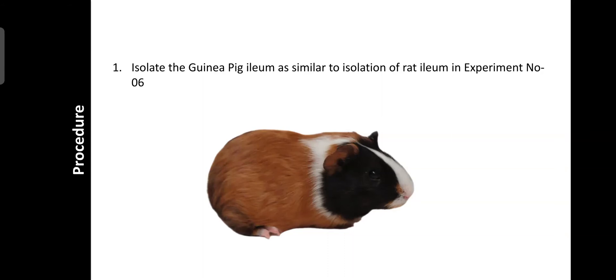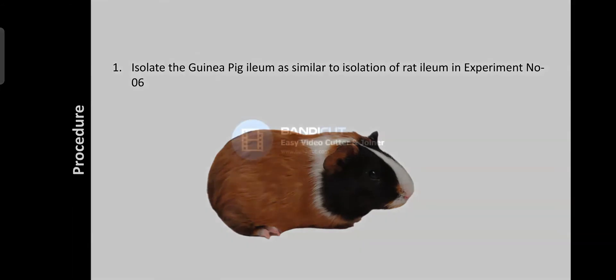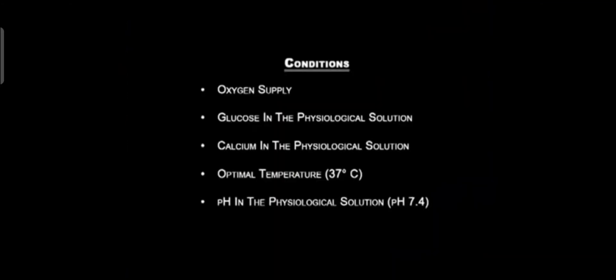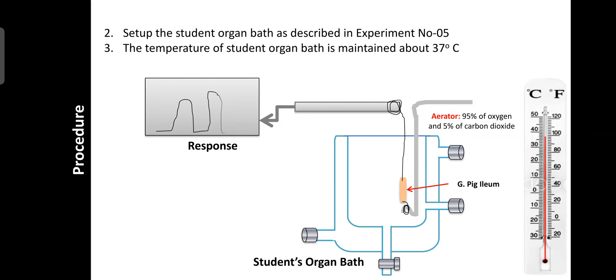Regarding procedure: isolate the guinea pig ileum similarly to the isolation of rat ileum described in experiment number six. The isolated guinea pig ileum is washed by keeping it in the tissue organ bath for 30 minutes. Set up the student organ bath as described in experiment number five. The temperature of the organ bath should be maintained at 37 degrees centigrade with the help of a thermostat and heater.